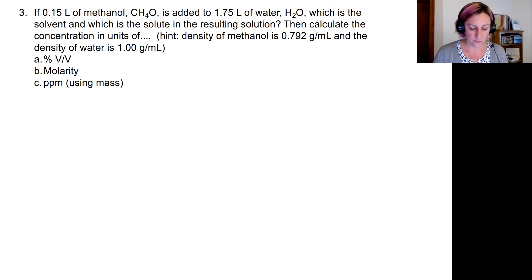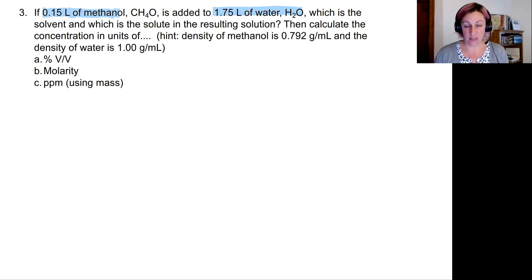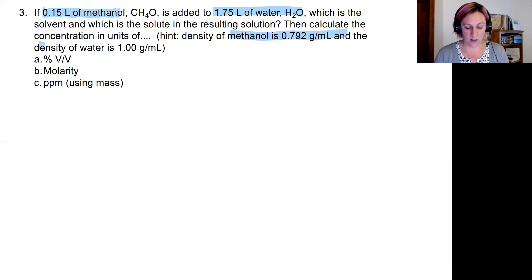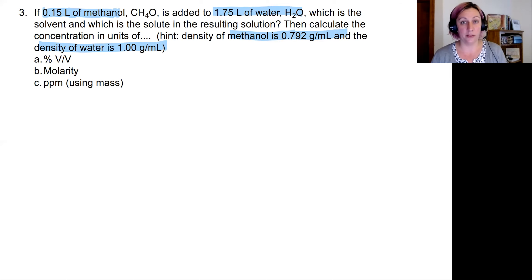We have 0.15 liters of methanol added to 1.5 liters of water, which is the solvent because we have more of it than we have of our methanol. We're going to figure out the concentrations for each of these. We can see that we have methanol's density and also the density of water, which we're going to assume is one gram per milliliter — so slightly above room temperature is probably what we're looking at.